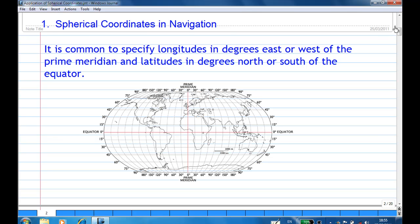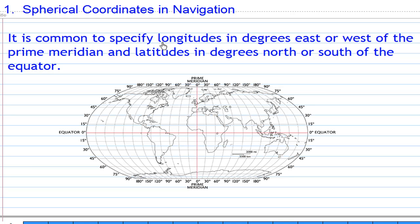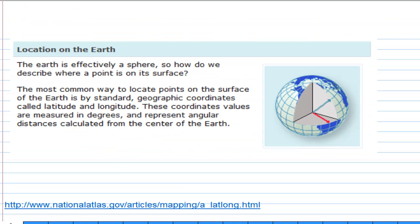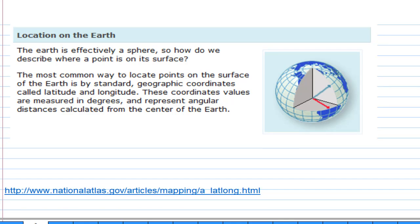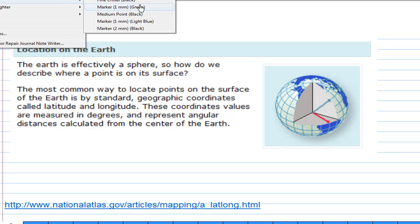First, let's understand how we specify the location of a point on Earth. We use longitude in degrees and latitude in degrees. The longitude is measured from the prime meridian, which is a great circle passing through the North Pole, South Pole, and a place called Greenwich. We measure the location of a point east or west from there. The latitude in degrees is measured from the equator.